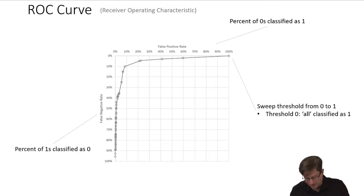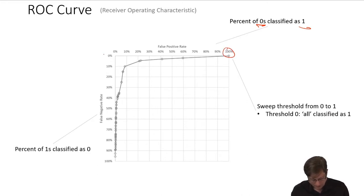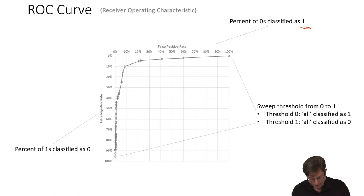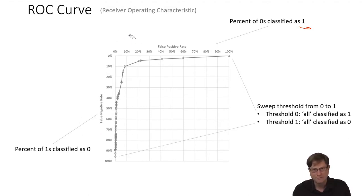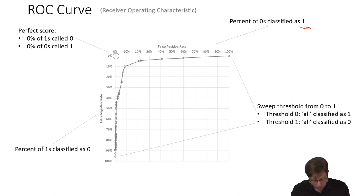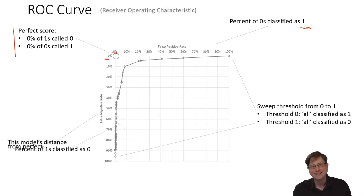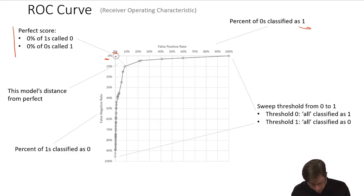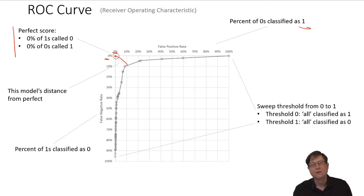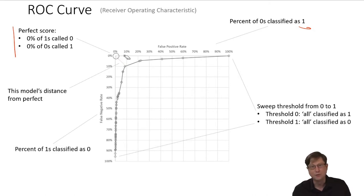With a threshold of zero, everything is classified as one, so the percent of zeros classified as ones is 100% and the false negative rate is 0%. With a threshold of one, everything is classified as zero — no false positives, but every positive is a false negative. At the point where you have no false positives and no false negatives, you have a perfect model. So when you look at an ROC curve, the distance from the origin toward where your model's curve sits gives you a sense of how close to perfect the model is. You'd prefer ROC curves that tend toward that ideal region.